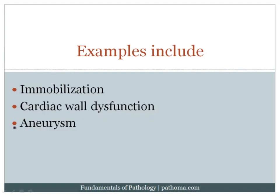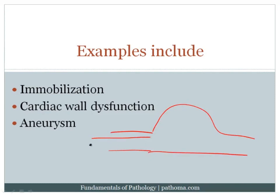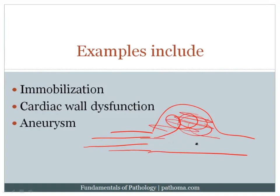Another example is aneurysm — a balloon-like dilatation of a portion of the blood vessel. Normally blood flow is laminar and continuous, but when blood enters this area of aneurysm it can become slightly irregular in its flow. When it becomes irregular, there's going to be an increased risk for formation of thrombus within the aneurysm. That's an important general principle of pathology as well.